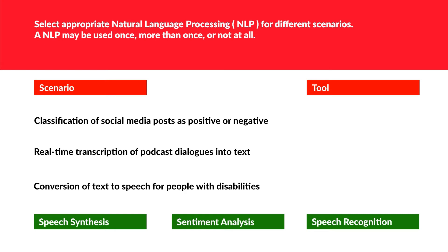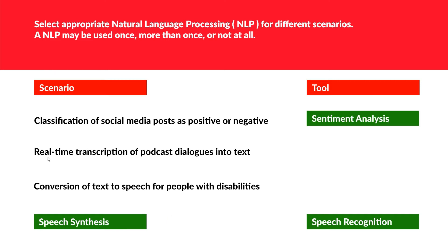This drag-and-drop question is related to NLP and is a very popular topic for AI-900, so prepare well. The first statement — classification of social media posts as positive or negative — is a no-brainer: this is sentiment analysis. The next statement — real-time transcription of podcast dialogue into text — may be confusing because speech synthesis and speech recognition both seem relevant at a high level.